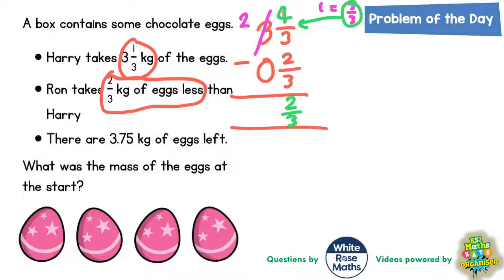And two whole ones take away zero would be two whole ones. So Ron must take two and two thirds of a kilogram of the eggs. Now there is another way you could have worked out that two and two thirds.